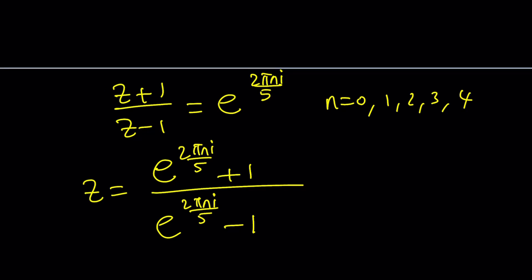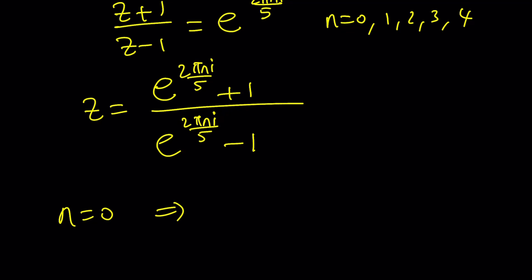The problem is if n is equal to 0, we get z equals e to the power 0, which is 1. 1 plus 1 divided by 1 minus 1. Uh-oh. We can't divide by 0. That's not legal, right? So what is going on here? Let me tell you.